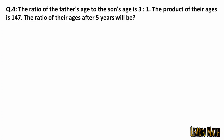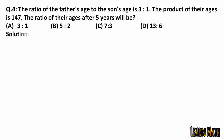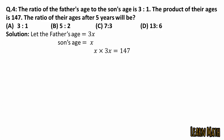The fourth question is: the ratio of father's age to son's age is 3:1, and the product of their ages is 147. What will be the ratio of their ages after five years? Let the father's age be 3x and the son's age be x. The product gives 3x times x equals 147, so 3x squared equals 147. Dividing both sides by 3, x squared equals 49, therefore x equals 7.